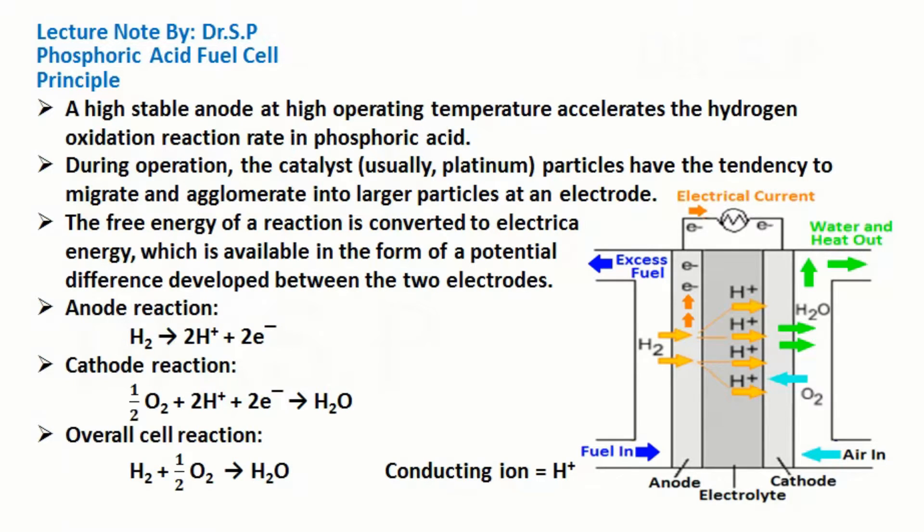The free energy of a reaction is converted to electrical energy, which is available in the form of a potential difference developed between the two electrodes.